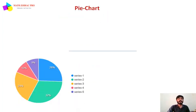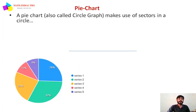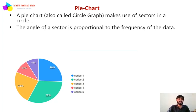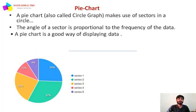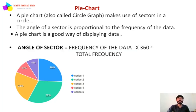First is the pie chart, also called a circle graph or pie graph. It makes use of sectors in a circle, and the angle of the sector is proportional to the frequency of the data. A pie chart is a good way of displaying data. The angle of sector formula is: frequency of the data divided by total frequency, multiplied by 360 degrees.